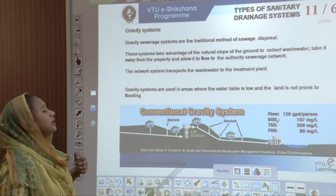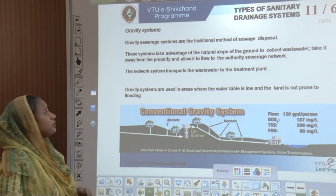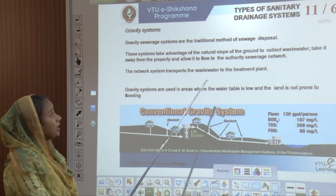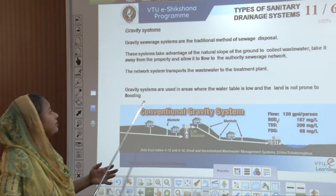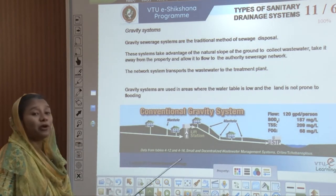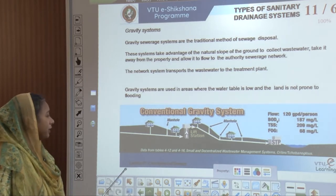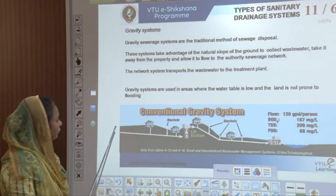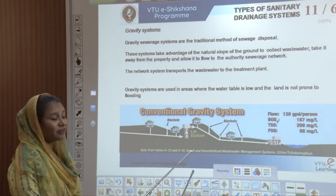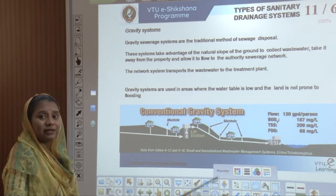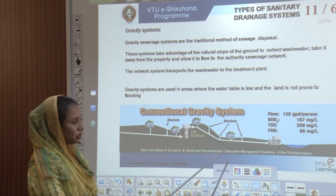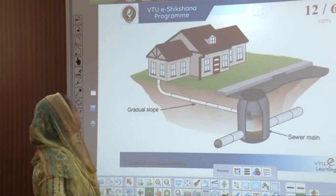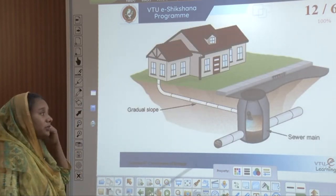Gravity systems are the traditional methods of sewage disposal. These systems take advantage of the natural slope of the ground, collecting all the wastewater away from properties and allowing flow through the authority's sewage network. When this system transports the wastewater to the treatment plant, the water table is very low and the land is not prone to flooding. From residences, water flows through manholes via the gravity system; when there is an uphill, a lift station pulls it up, then it flows down again by gravity into the treatment plant. Most home collection systems are gravity flow or gravity flow plus pump stations.